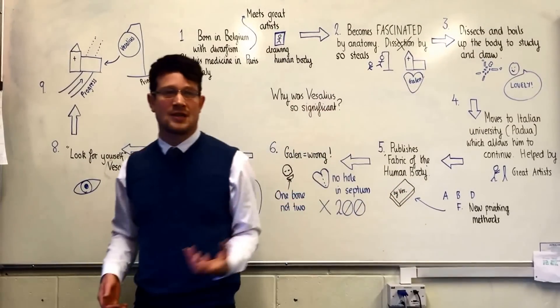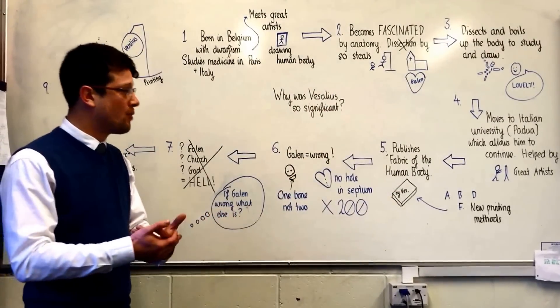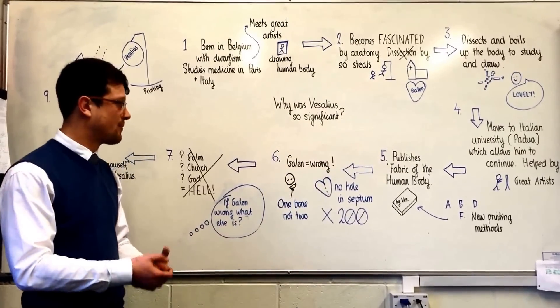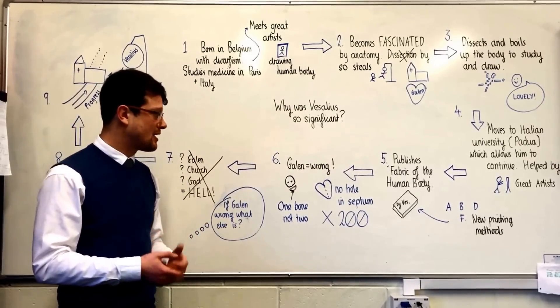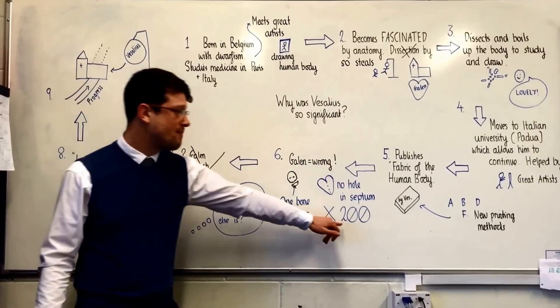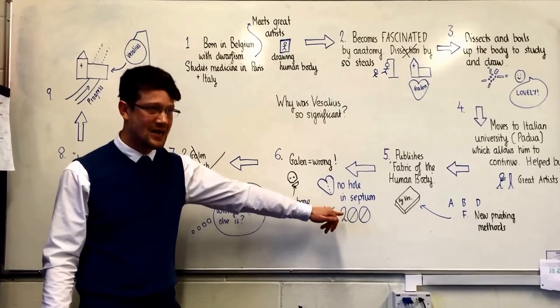Now the fact that Vesalius's book was beautiful well put together and very readable was not the most important thing about it. The most important thing about it was that Vesalius concluded that Galen had been wrong and in fact Galen had made over 200 mistakes.